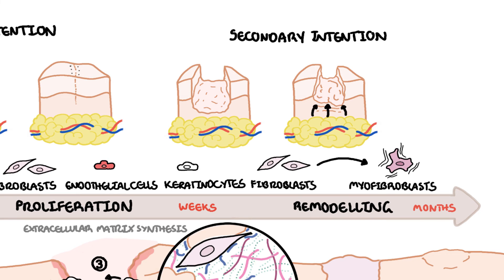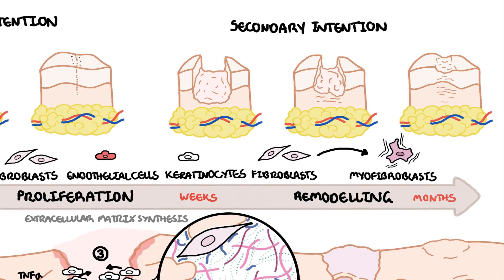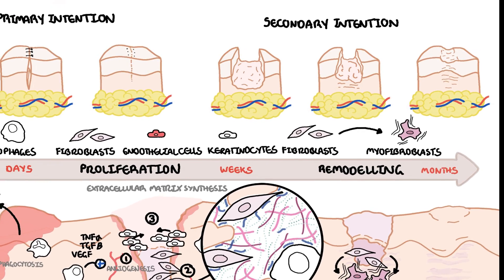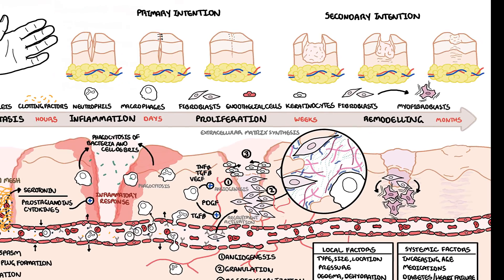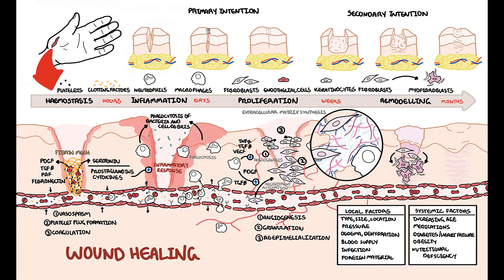In healing by secondary intention, the wound heals through a process that includes granulation tissue formation and re-epithelialization specifically. Secondary intention wound healing is commonly done after an excessive loss of soft tissue, such as major trauma or severe burns, and myofibroblasts play a major role in this type of wound healing. In summary, wound healing involves four phases: hemostasis, inflammation, proliferation, and remodeling, as well as local and systemic factors that could impair wound healing.